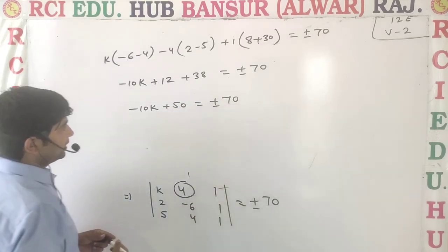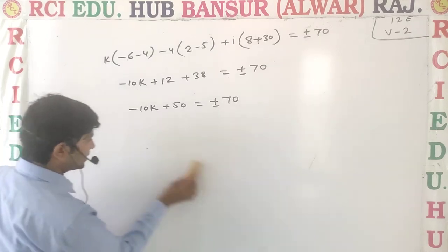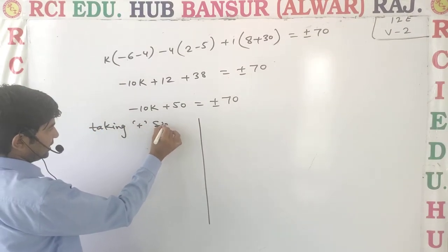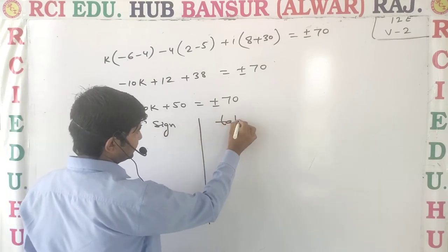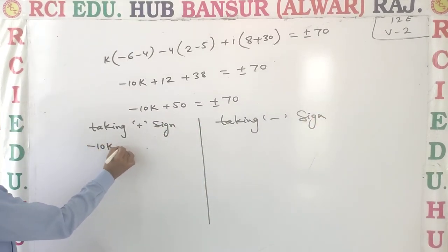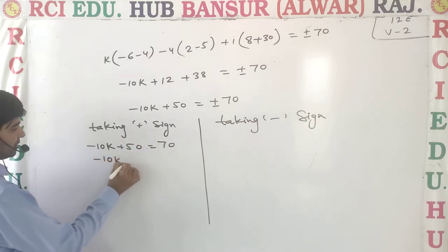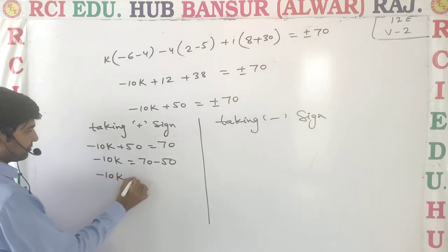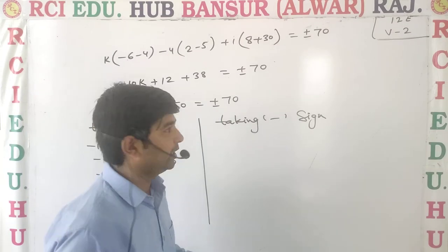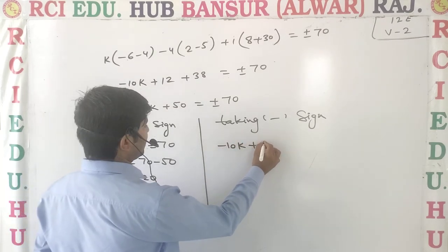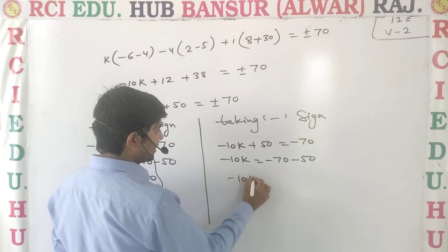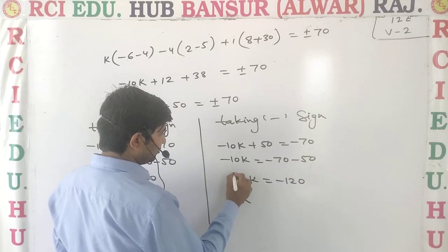Now we consider two cases. Taking the positive sign: minus 10k plus 50 equals 70, so minus 10k equals 20, giving k equals minus 2. Taking the negative sign: minus 10k plus 50 equals minus 70, so minus 10k equals minus 120.